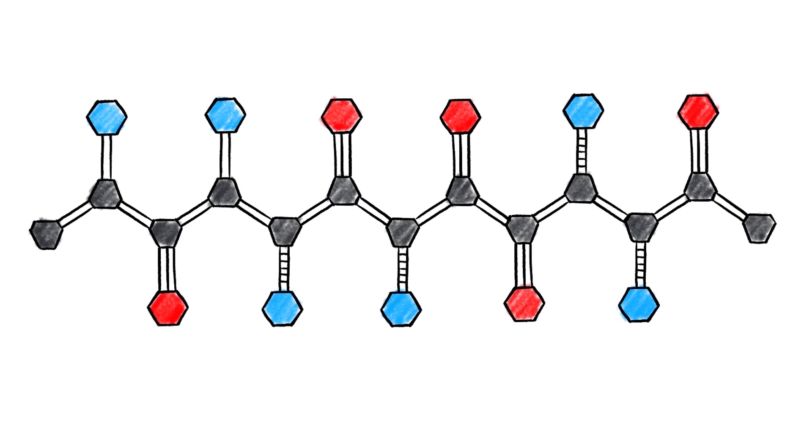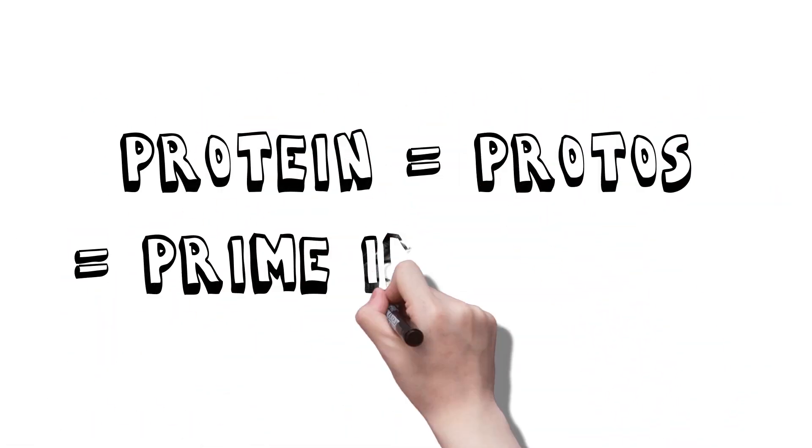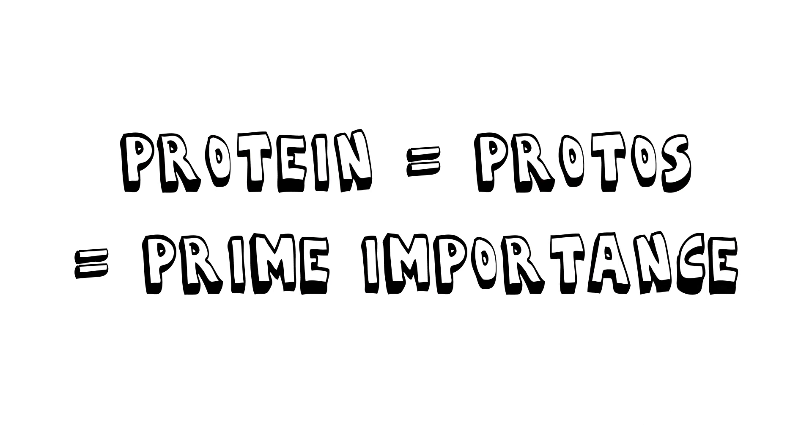Getting the protein your body needs is vital. Protein is essential to every cell and organ system in the body. The word protein comes from the Greek word protos, which means of prime importance.